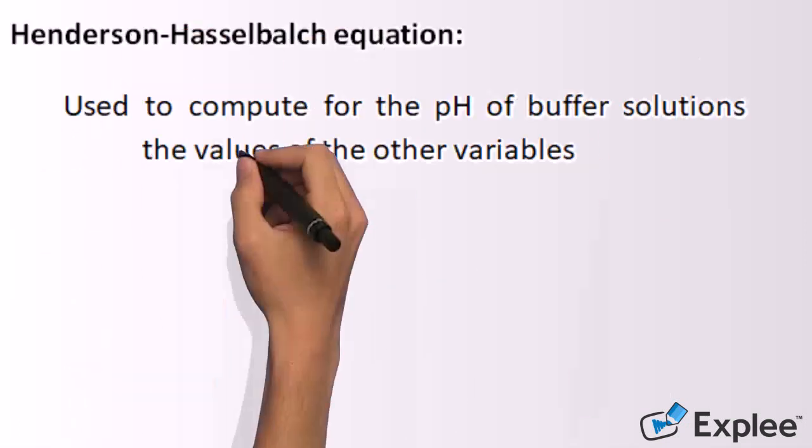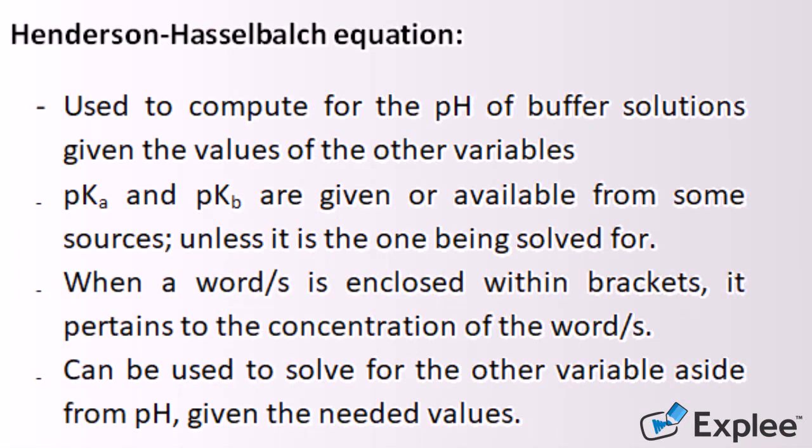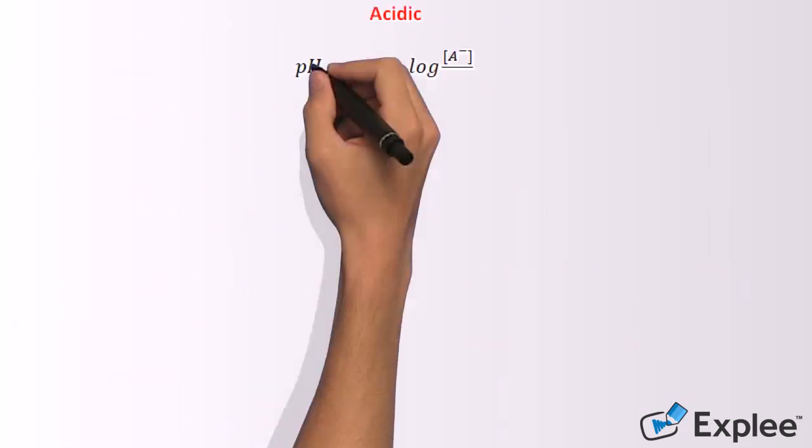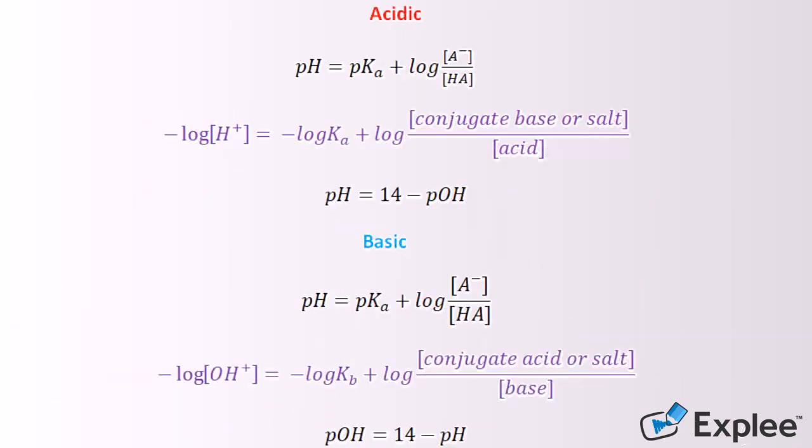The Henderson-Hasselbalch equation is used to compute for the pH of buffer solutions given the values of the other variables. pKa and pKb are given or available from some sources, unless that is the one being solved for. When a word is enclosed within brackets, it pertains to the concentration of the word. This equation can also be used to solve for the other variable aside from pH, given the needed values.